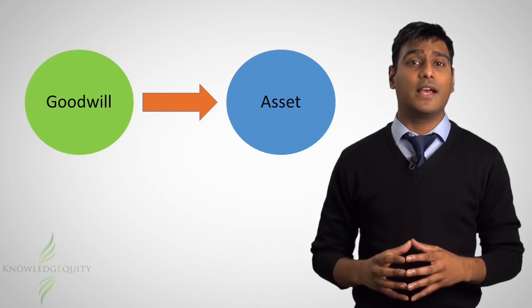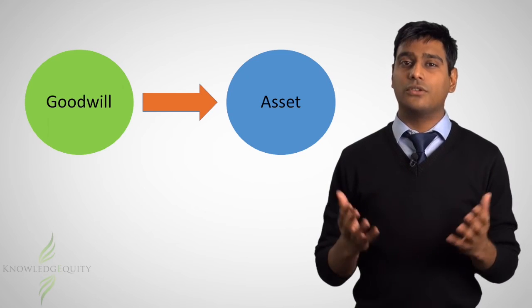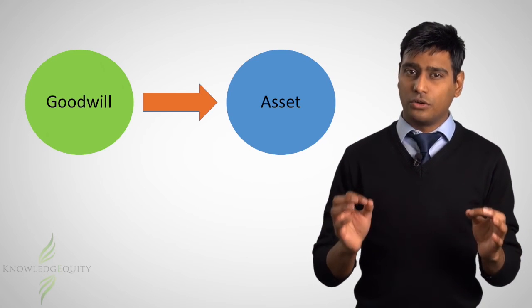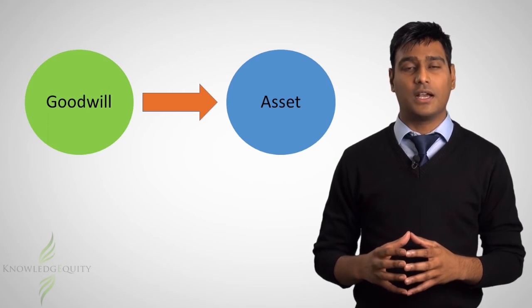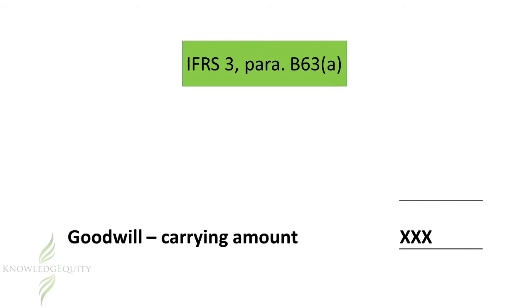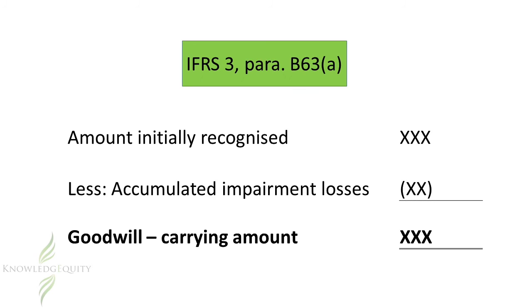Goodwill is recognized as an asset at acquisition date. We now need to consider how goodwill is measured in subsequent years after initial recognition. IFRS 3 paragraph 63 requires it to be measured as the amount initially recognized minus accumulated impairment losses.